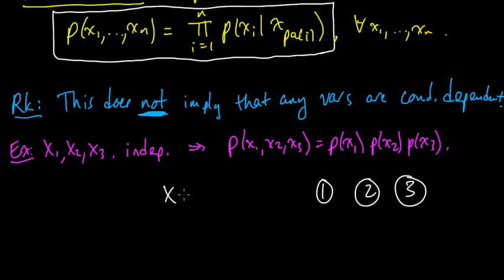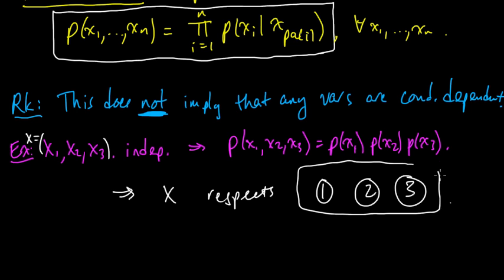then x, let's say, let's call x this vector, x1, x2, and x3, x respects this graph. If this is g here, I'll just put something so you know that this is a graph, this is g.